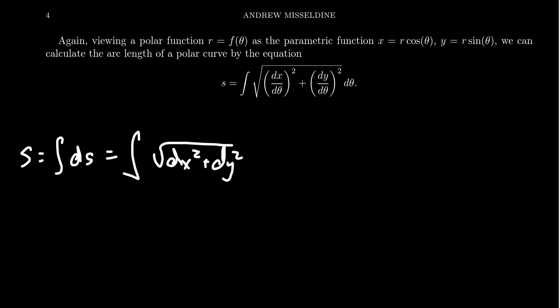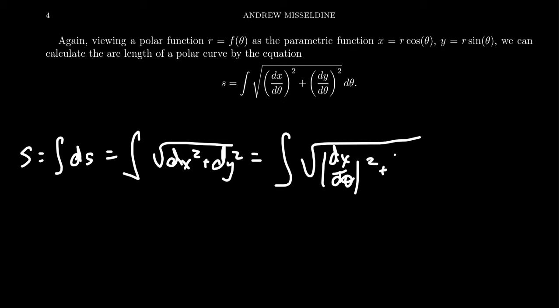With x equals r cosine theta and y equals r sine theta, if we take derivatives appropriately, we can factor out a d theta. So we get the integral of the square root of (dx/dθ)² plus (dy/dθ)², times d theta on the outside. We just have to take the derivative of x and y with respect to theta.